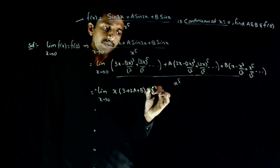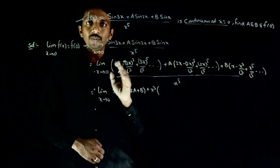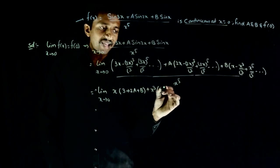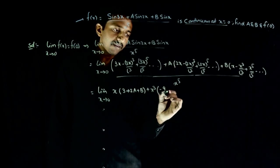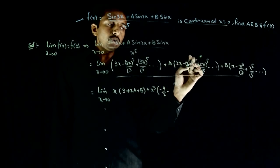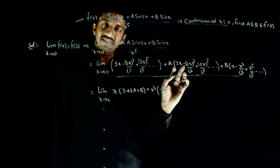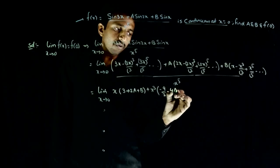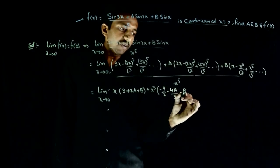After that, what is the coefficient with x cube? Minus 3 cube by 3 factorial, that is minus 9 by 2. And you have minus 2 cube by 3 factorial, that is 2 squared by 3, which is 4 by 3. So minus 4a by 3. And here minus b by 6. This is the coefficient of x cube.